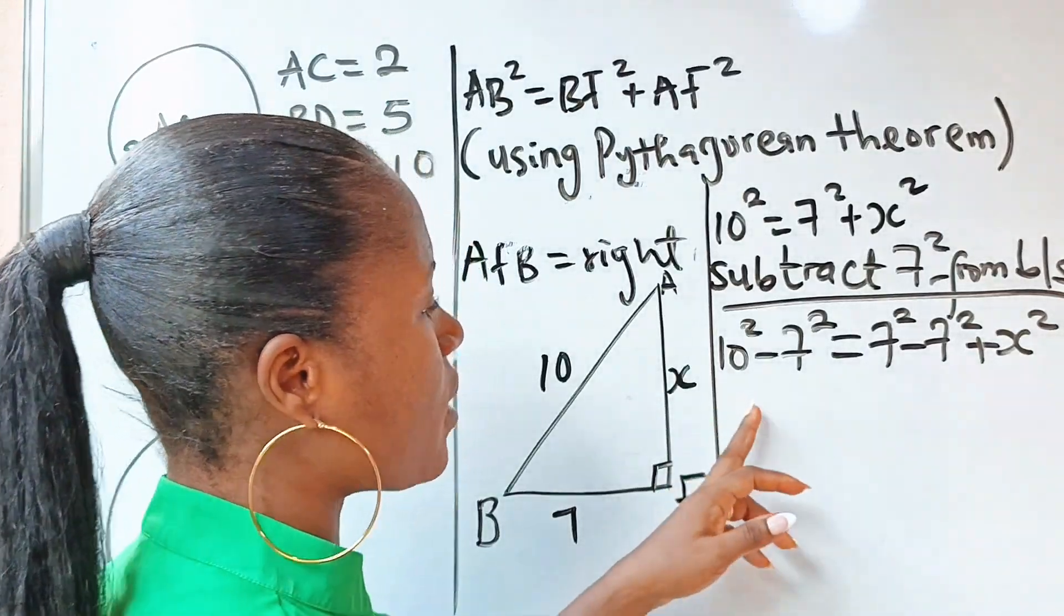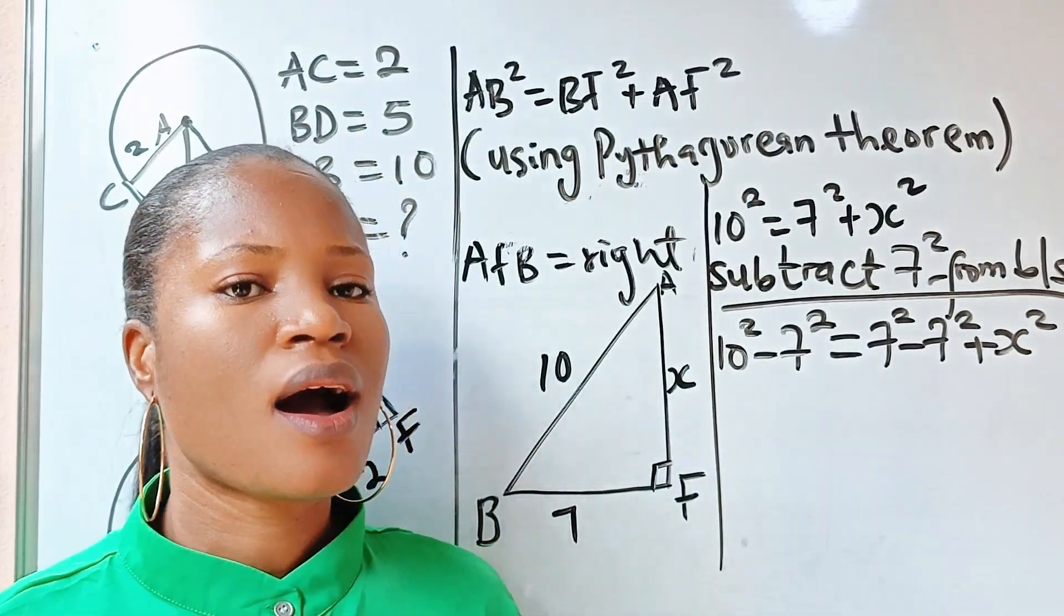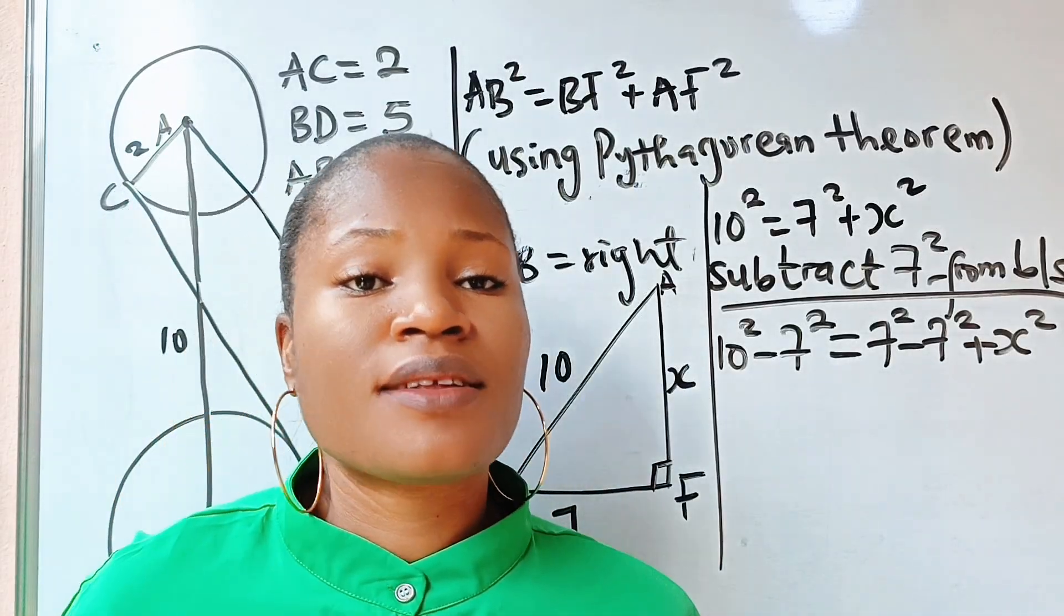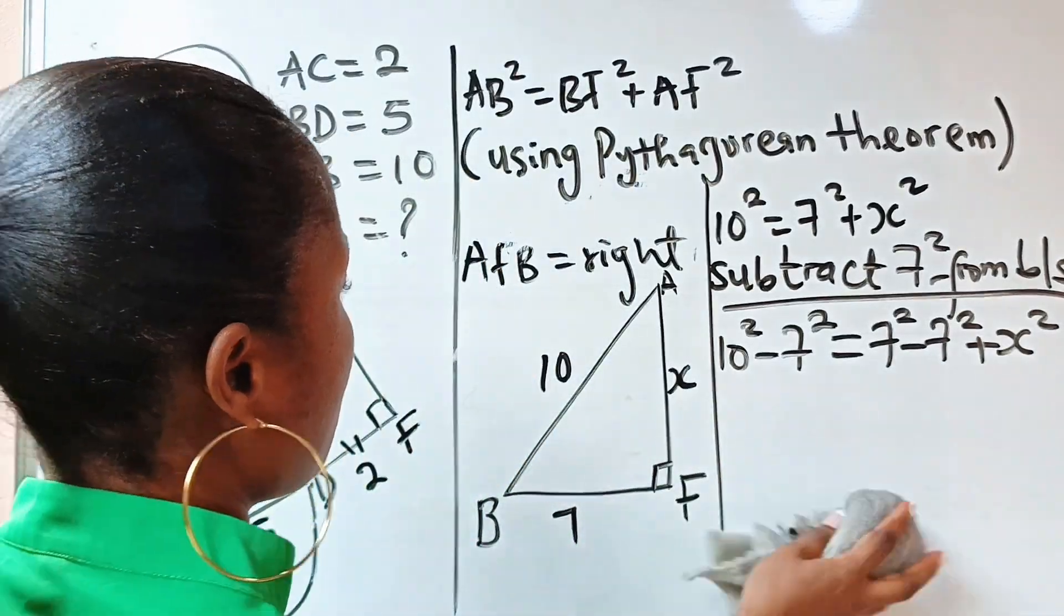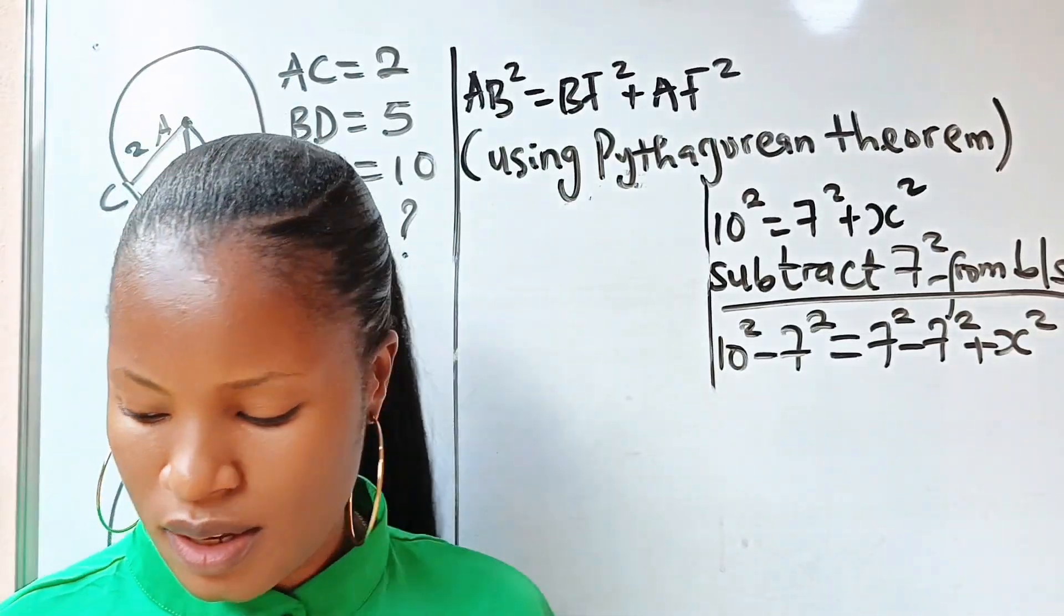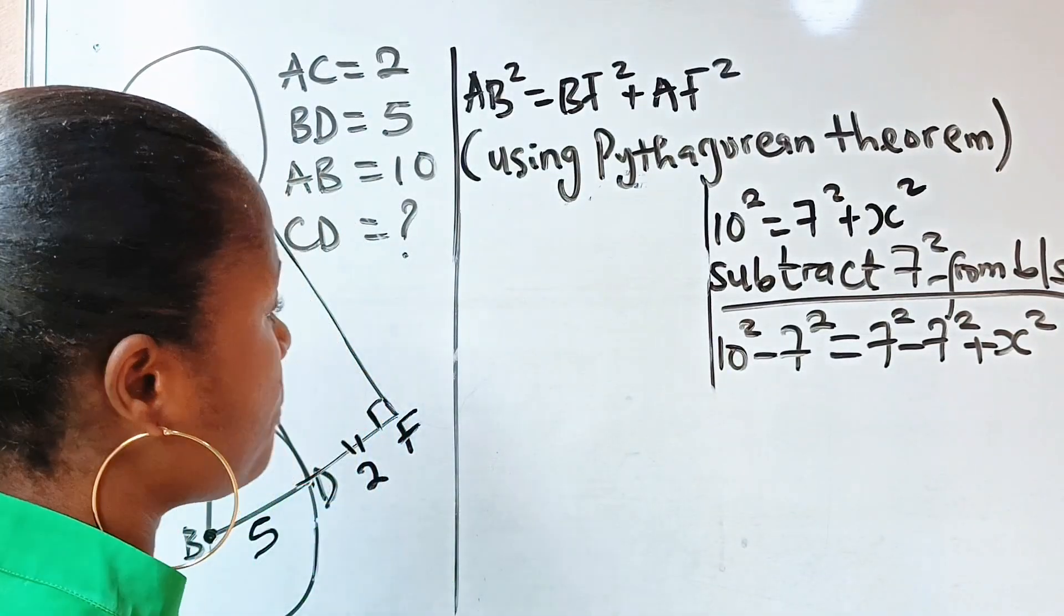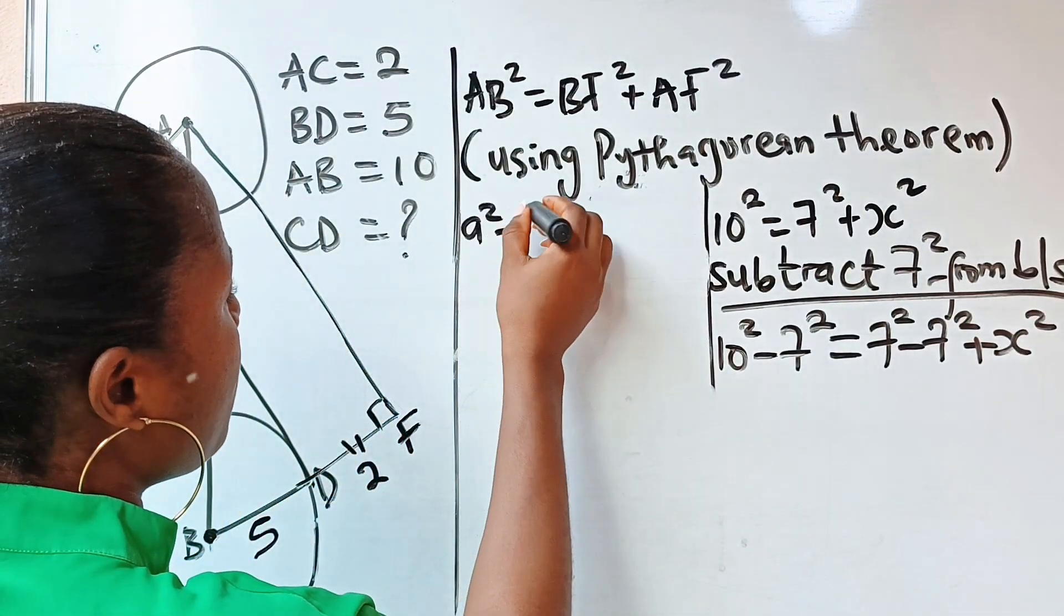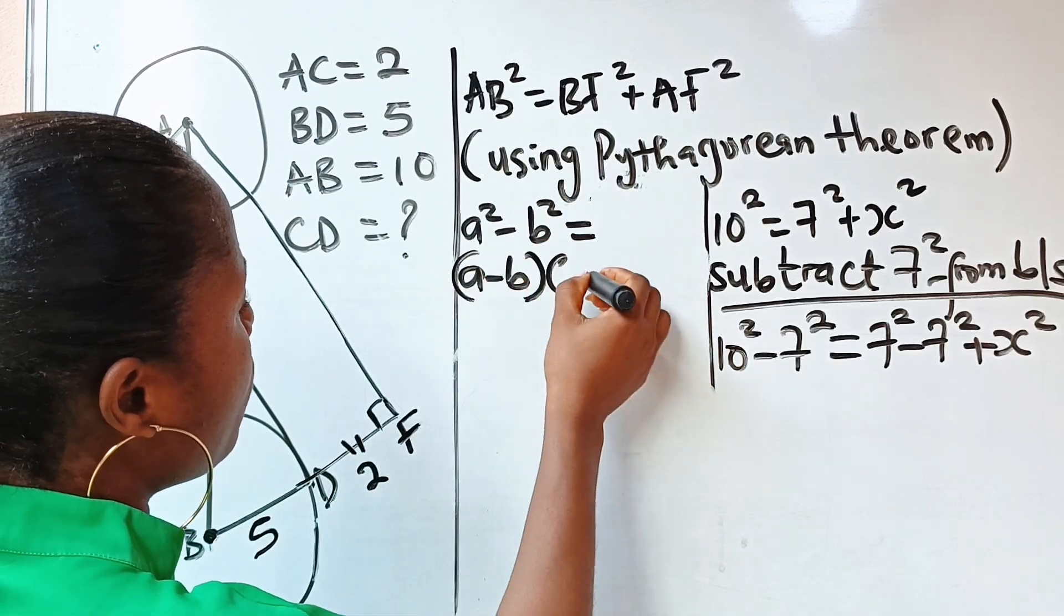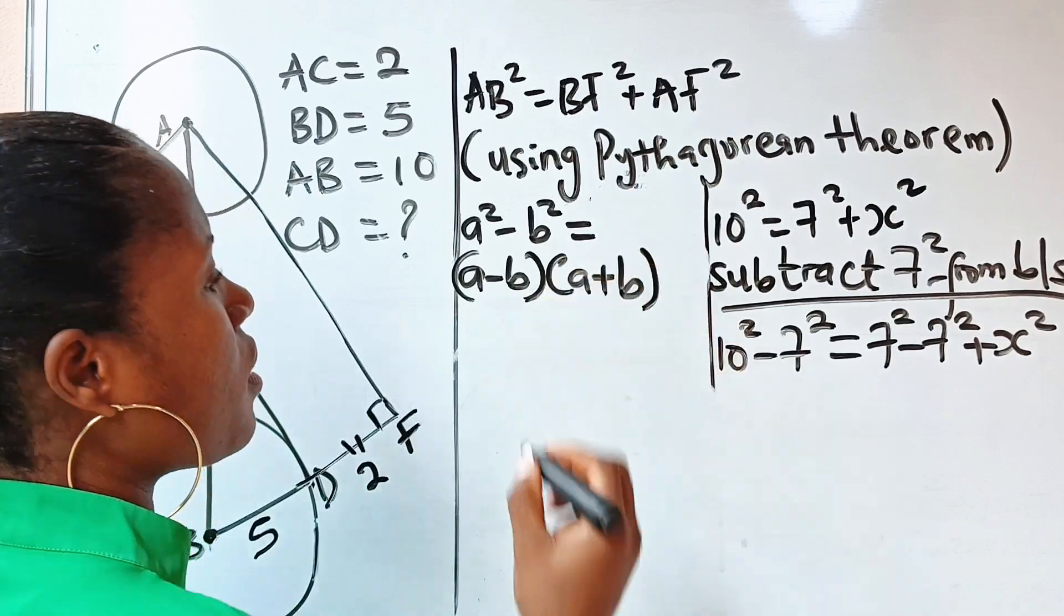Now 10 squared minus 7 squared, remember difference of two squares. Now according to difference of two squares, it states that a squared minus b squared is equal to a minus b multiplied by a plus b.